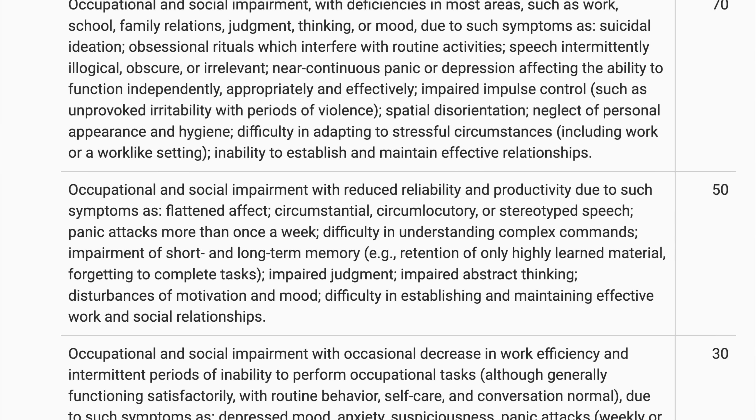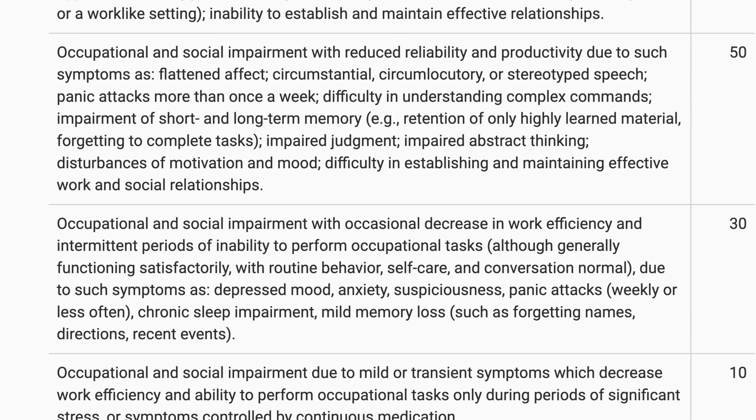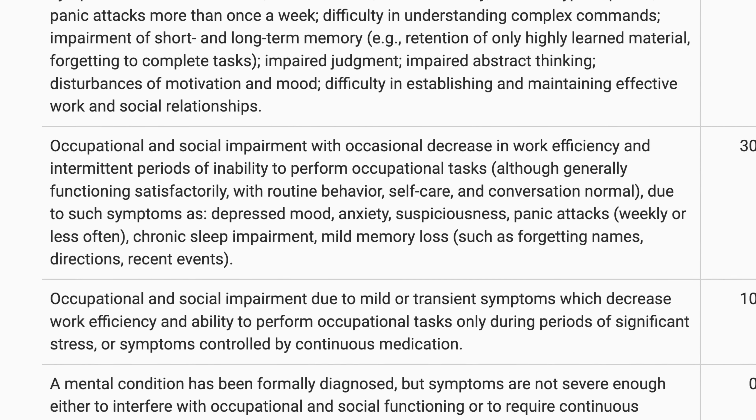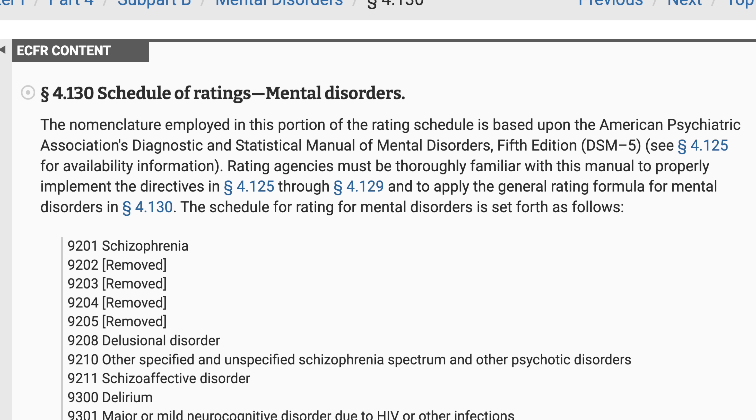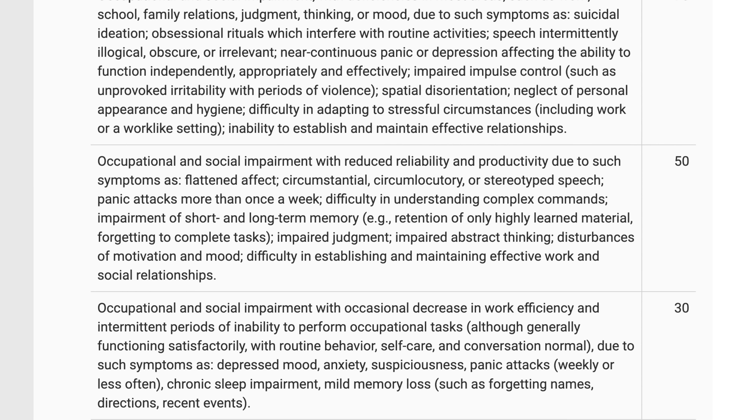That's what flattened affect is, and it's in the 50% VA mental health rating criteria. Other things to note: you're going to have symptoms in the 10%, 30%, and 50% rating schedules. If you have enough at 70%, that could warrant a higher rating. If you currently have a 50% or 30% rating, don't leave the 10% stuff out — you're going to have symptoms all the way through the rating schedule.